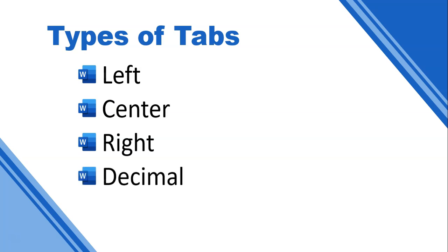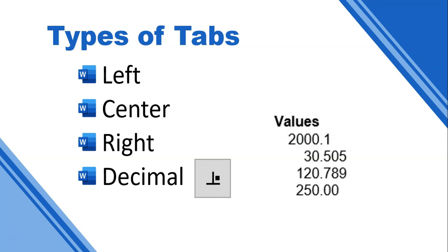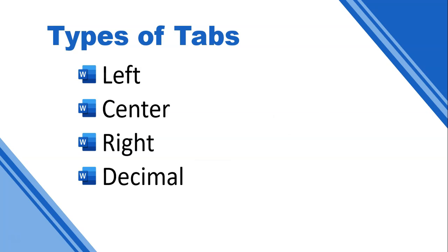The decimal tab looks something like the center tab but with a little dot in it. That dot means decimal numbers are aligned — the decimal point of each number sits underneath each other. You'll notice that a heading without a decimal value just aligns up to that dot position, so be aware of that when you've got a heading.